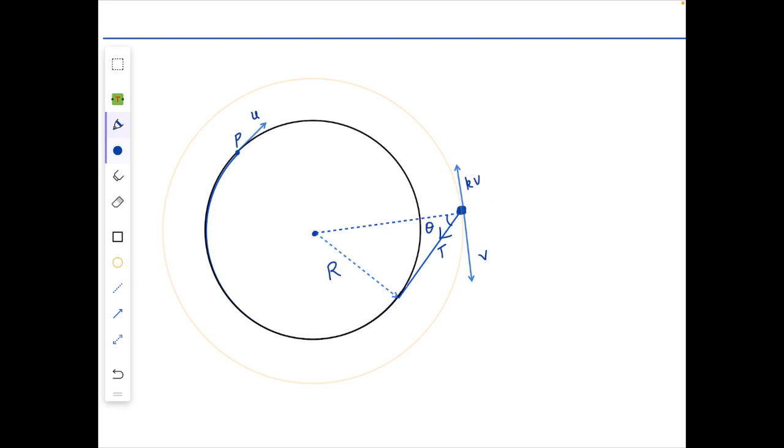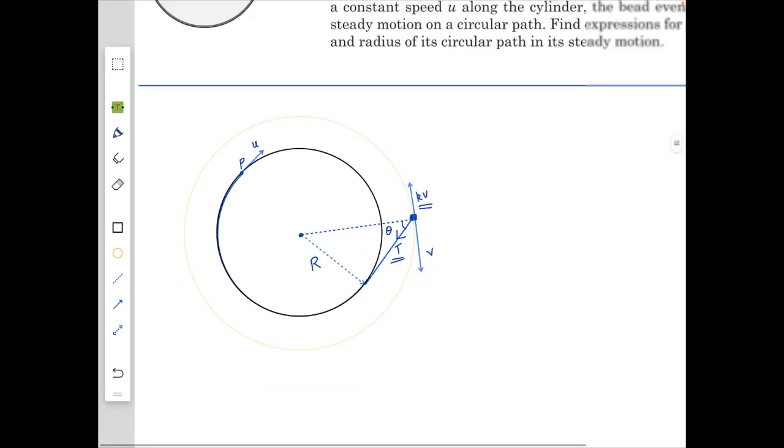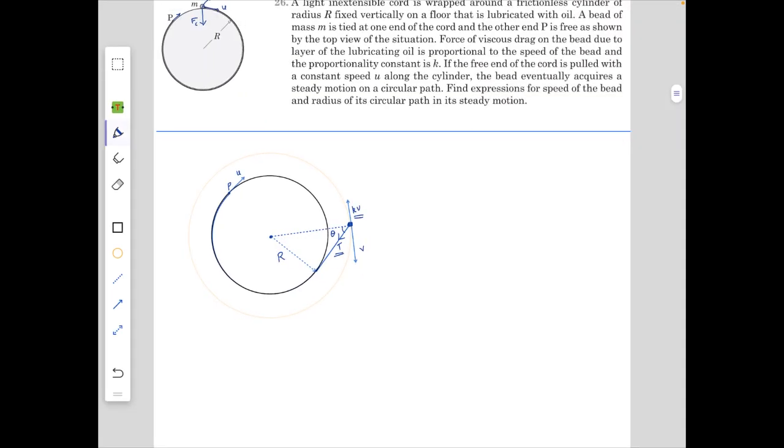So the forces on it will be kV in the direction opposite to its velocity and will be tangential to the orbit, and the tension T along the string. So the equations we get here, first of all, by constraint relation that the velocity of the bead along the string should be equal to U. So U equals V sine of theta. This is the first equation.